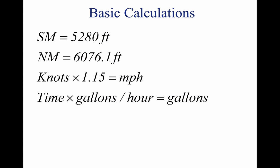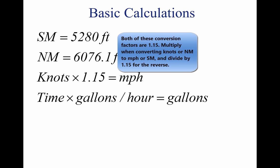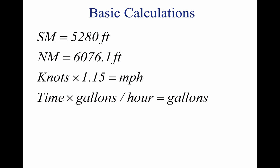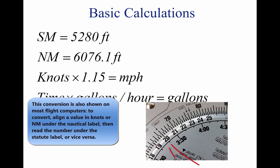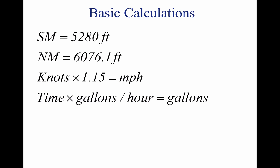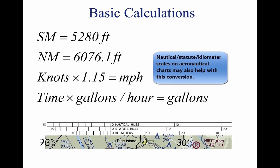Because there are 6,076.1 feet in 1 nautical mile and 5,280 feet in 1 statute mile, the conversion factor is 1.15. To convert knots to miles per hour, multiply speed in knots by 1.15. For example, a wind speed of 20 knots is equivalent to 23 miles per hour. Most flight computers or electronic calculators have a means of making this conversion. Another quick method is to use the scales of NM and SM at the bottom of aeronautical charts.